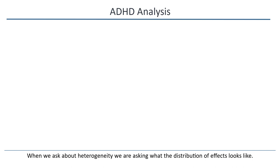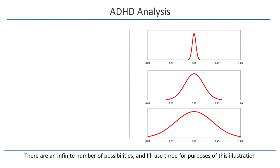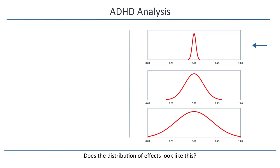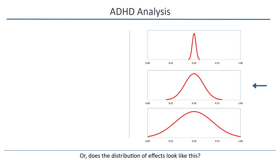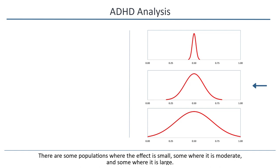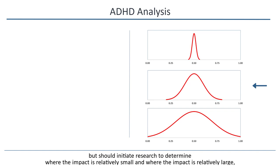Does the distribution of effects look like this — in all populations, the treatment has a moderate effect; from a clinical perspective, the effect size is essentially the same in all comparable populations? Or does the distribution of effects look like this — there are some populations where the effect is small, some where it's moderate, and some where it's large? We might decide that we should begin using the drug now, but should initiate research to determine where the impact is relatively small and where the impact is relatively large, since this would allow us to use the drug more efficiently.